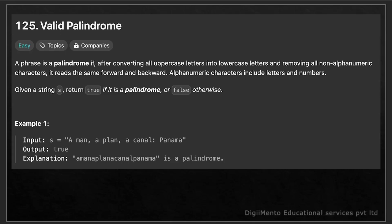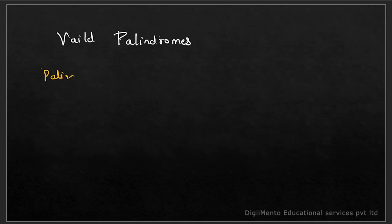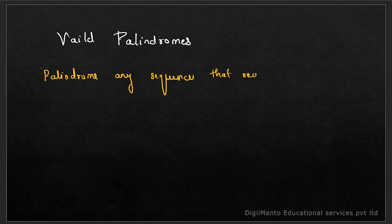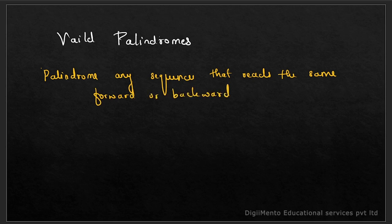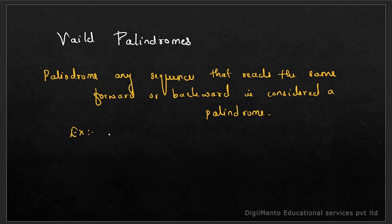The problem is Valid Palindrome. Let's understand what a palindrome is. A palindrome is basically any sequence that reads the same forward or backward and is considered a palindrome. For example, the palindrome can be 'race car'.